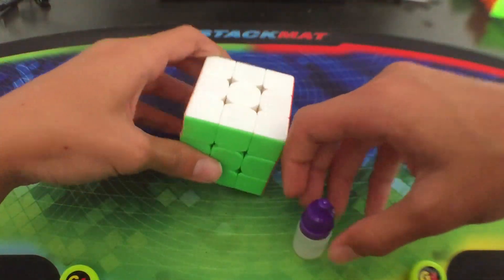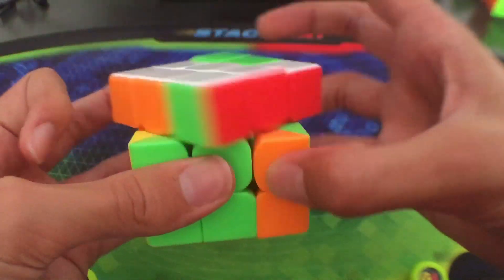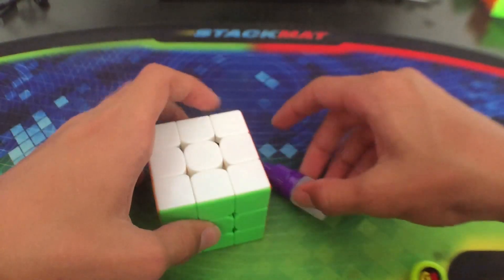Finally we have the version three which makes the puzzle a bit slower and more controllable. I'm going to use it on my GTS2M as it's pretty fast right now and it can be slowed down a bit. All right, let's get to it.